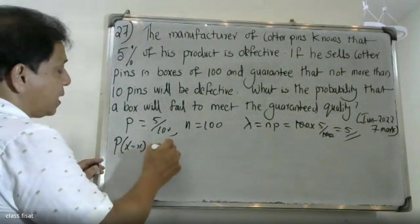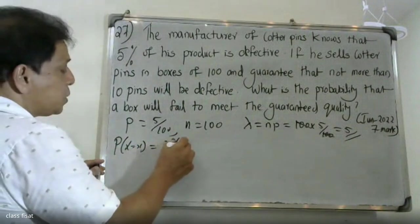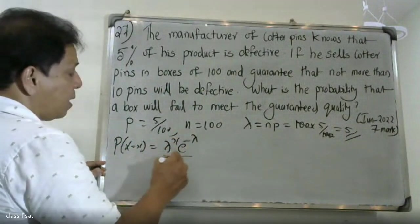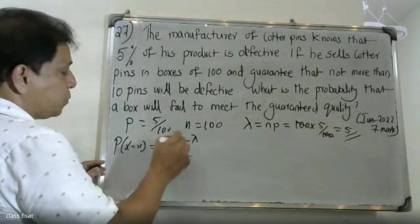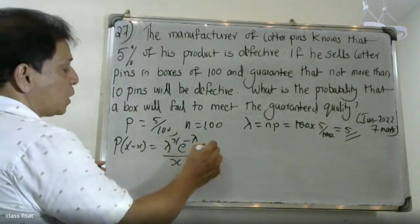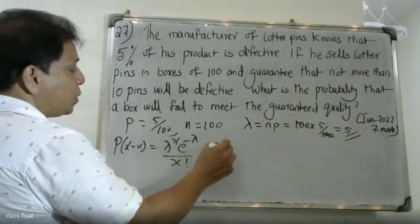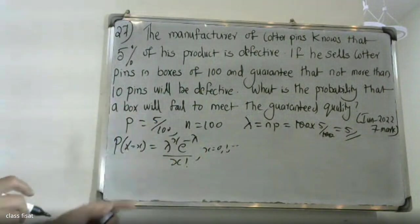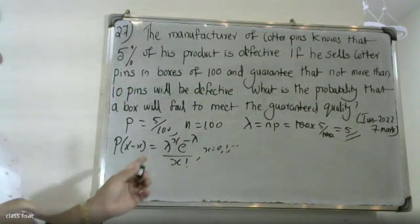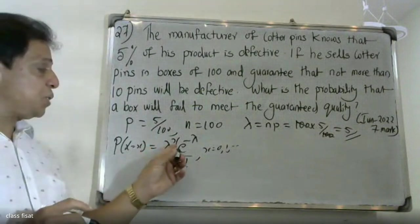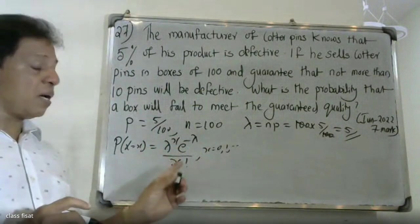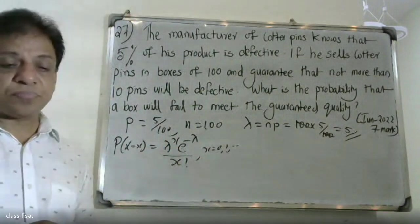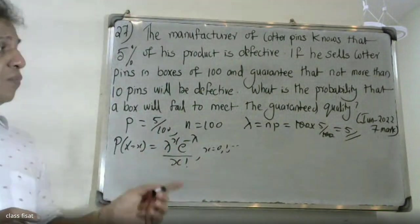In this situation, the Poisson distribution formula is: P(x) equals lambda raised to x, times e raised to minus lambda, divided by x factorial. Here lambda equals 5.